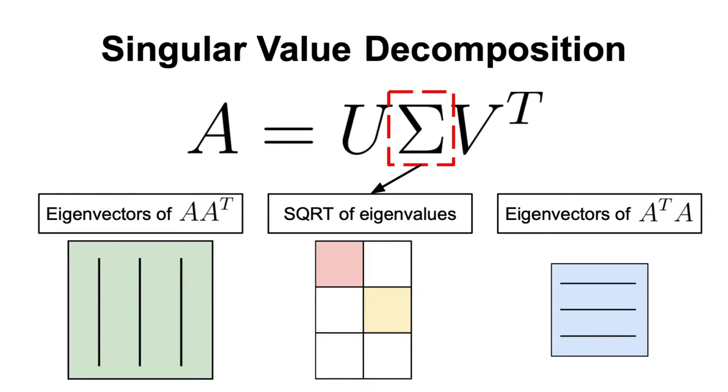Finally, the third matrix, Sigma, is a rectangular diagonal matrix that has the same dimensions as A and contains the singular values of A in descending order, which are essentially the square roots of the common eigenvalues of AA transpose and A transpose A, and represent the importance of each singular vector in the decomposition.